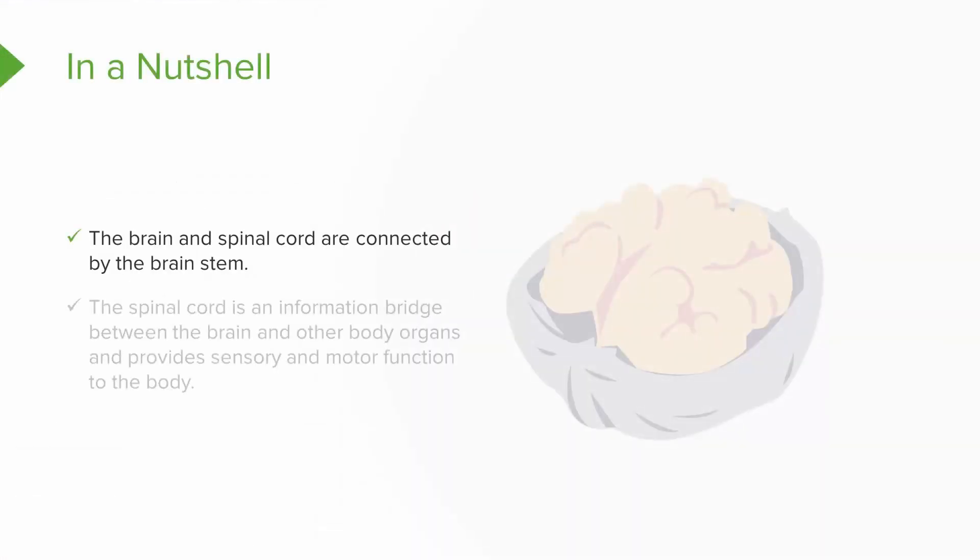The brain and spinal cord are connected by the brain stem. So in between the brain and the spinal cord, we have our three friends in the brain stem.